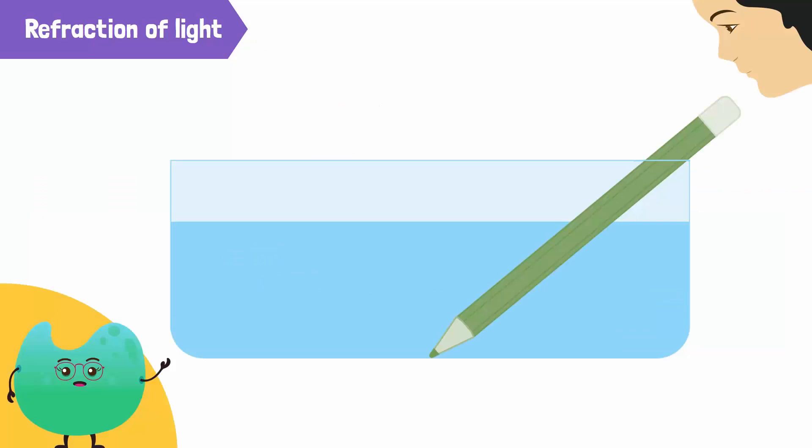Going back to our example of the pencil, when the light rays coming from the tip of the pencil pass from water to air, they change their direction. That is, they refract.